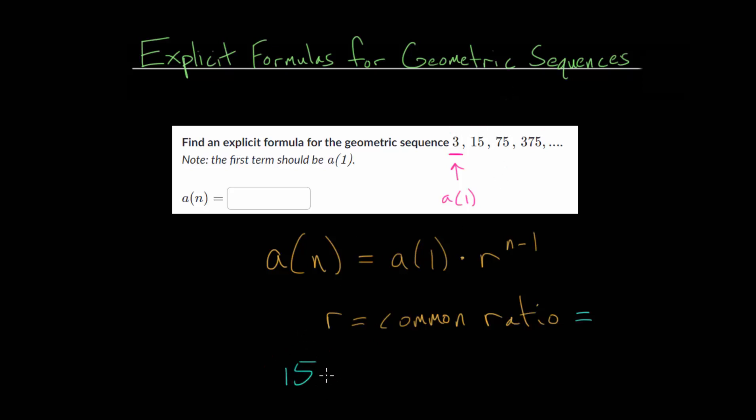to get to the next term, we're going to multiply by that common ratio r, and we're going to get 75 for this particular sequence. So we can solve that equation for r by dividing each side by 15. So r is 75 divided by 15. And 75 over 15 simplifies to 5.